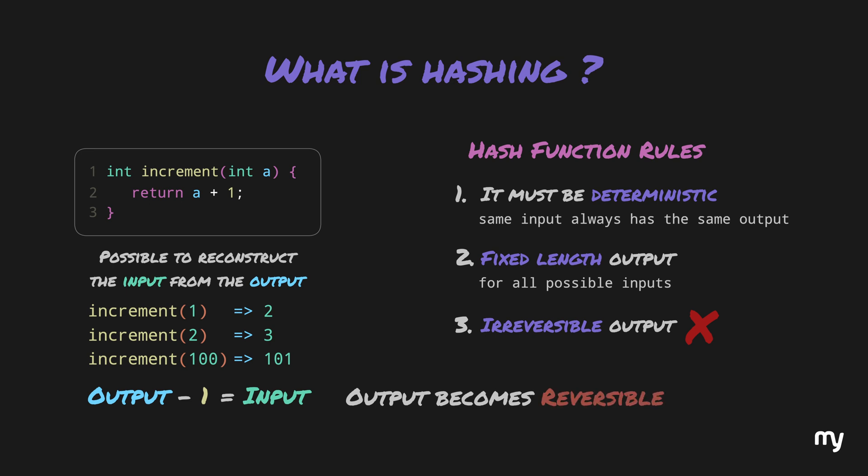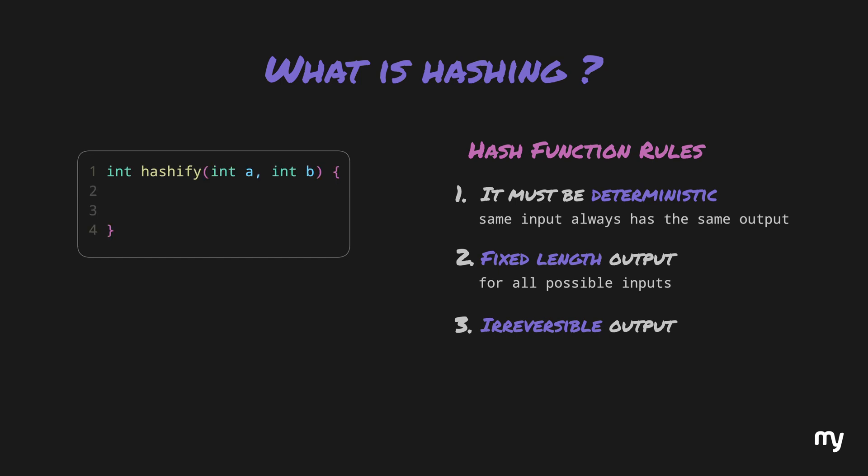So, let's try to write a cool function called hashify, which abides by all three rules. The job of this function is to add two numbers and then return its last digit. Now, let's try to see if it abides by all the rules. If we pass 1 and 2 just like last time, the sum becomes 3. Since this is a single digit, it is returned as is. Therefore, the output is 3.